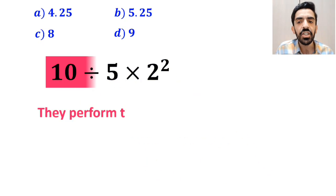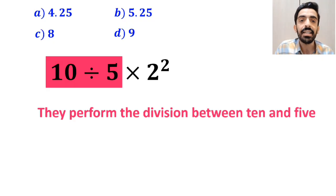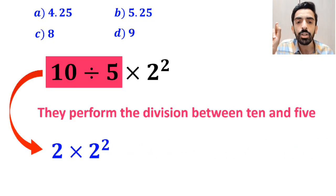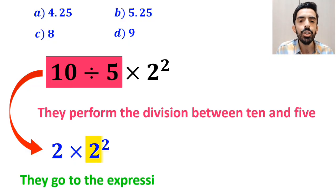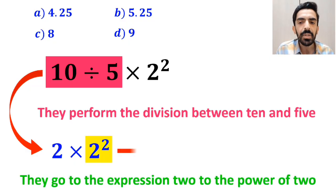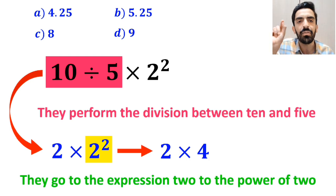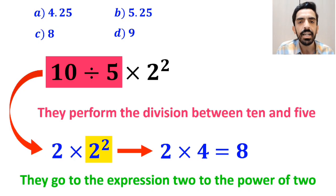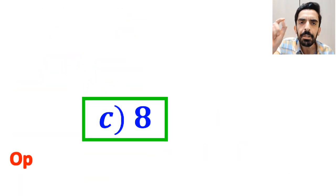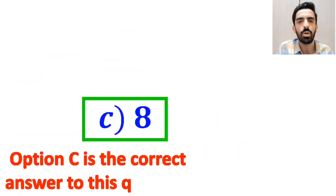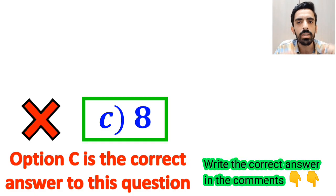Then they perform the division between 10 and 5, and instead of this expression, they write 2 times 2 to the power of 2. In the final step, they go to the expression 2 to the power of 2 and simplify this expression to 2 multiplied by 4, which ultimately gives them the answer 8. Then, without any hesitation, they quickly say that option C is the correct answer. But this answer is absolutely wrong.